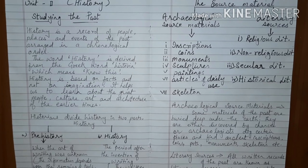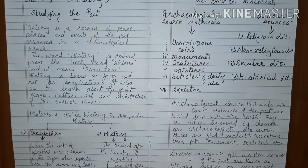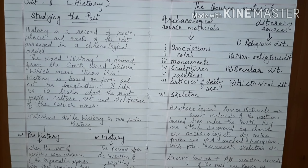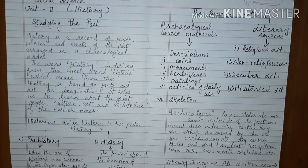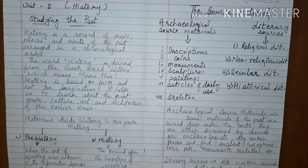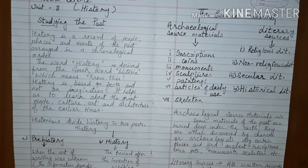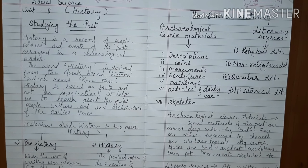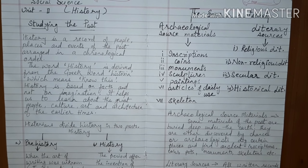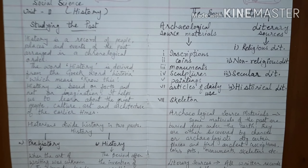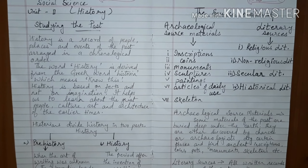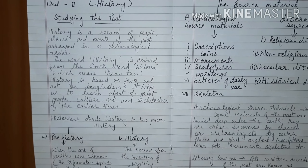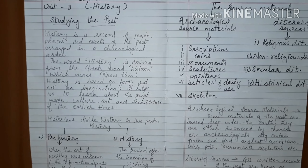What are literary source materials? All written records of the past are known as literary sources or manuscripts. They are very important for historians. Before the invention of paper, people wrote on dried palm leaves, bhoshpatra, copper plates, etc.